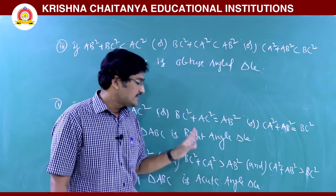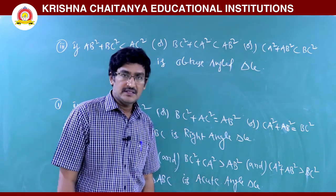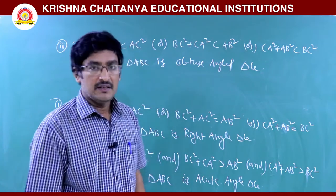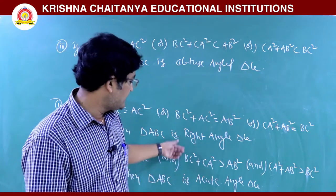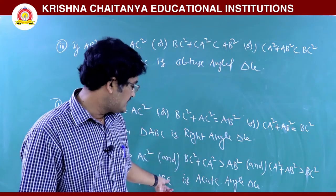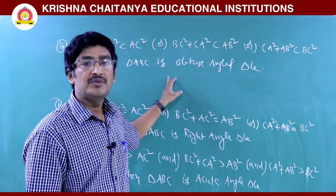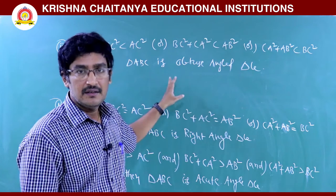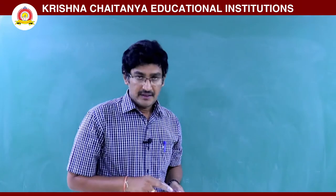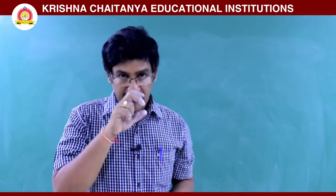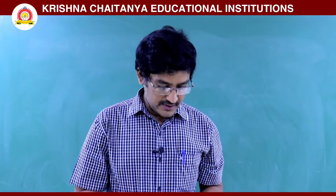So this is about the nature of the triangle. One is a right angle triangle, one is an acute angle triangle, and one is an obtuse angle triangle. Let me solve some problems about this concept.